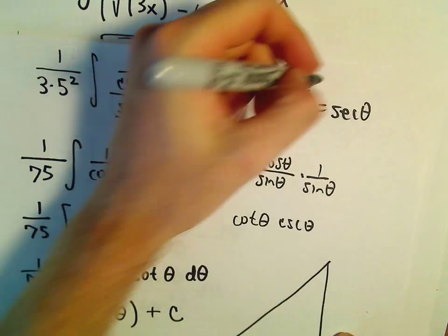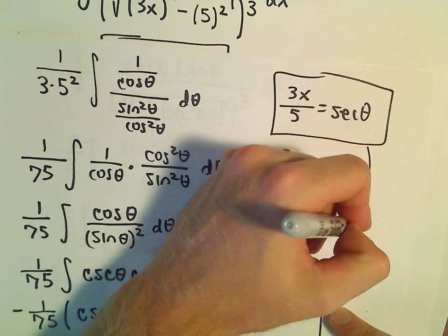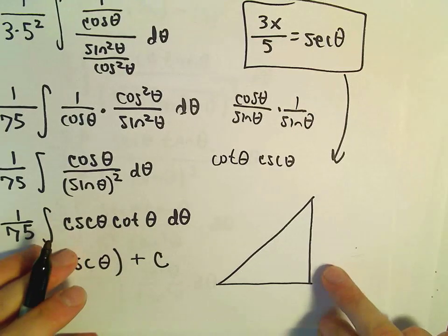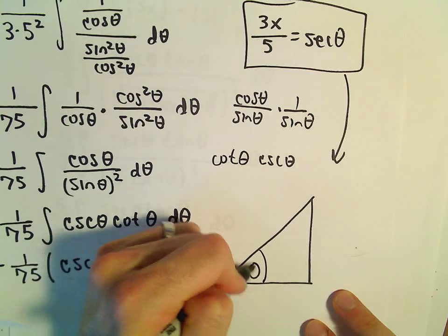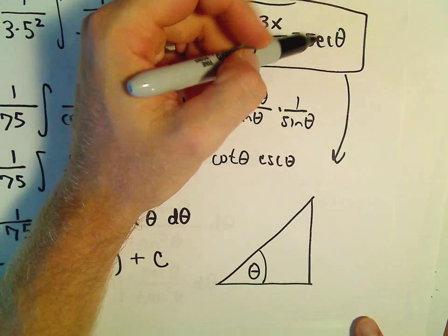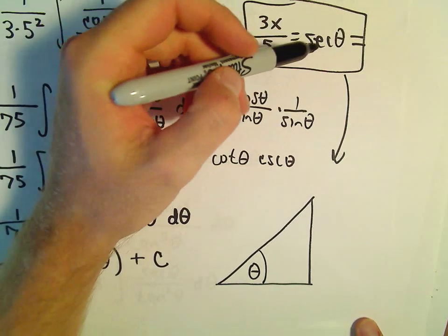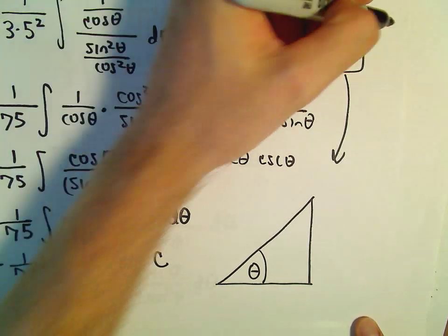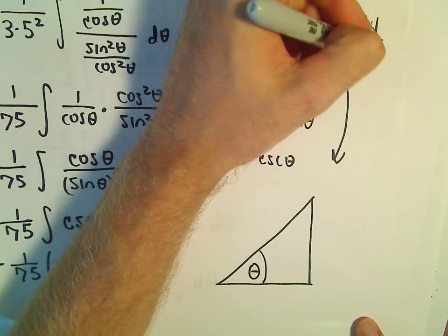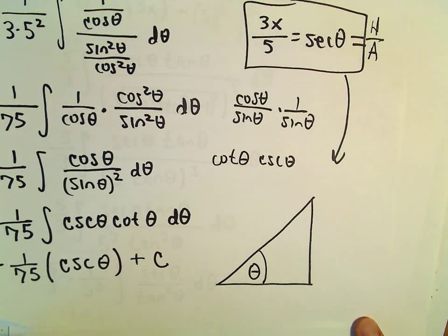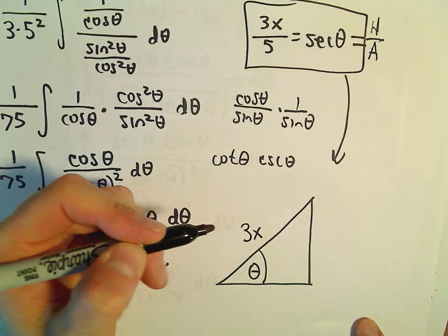So I'm just going to rewrite that as 3x over 5 equals secant of theta. Okay, so I'm going to use my, set up my right triangle based on this. So there's my angle theta. So let's see. Secant again is 1 over cosine.